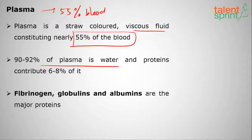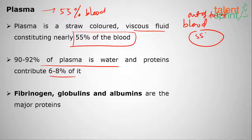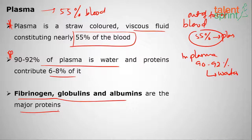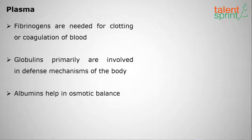Out of the total blood, 55% is plasma, and in plasma, 90 to 92% is water. The remaining portion has proteins. Those proteins are fibrinogen, globulins, and albumins, which are the major proteins.